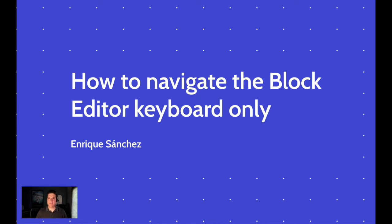We're going to start by going over some of the basics of keyboard navigation on the web, just so everyone is on the same page. We're also going to learn what some of the editor's keyboard shortcuts are and where we can find them. We're also going to cover how to navigate the block, including the block toolbar and the block settings or block inspector. Finally, we'll learn about a couple of cool features in the block editor that make navigating between blocks really easy, and then at the end we'll have some time for questions and comments.